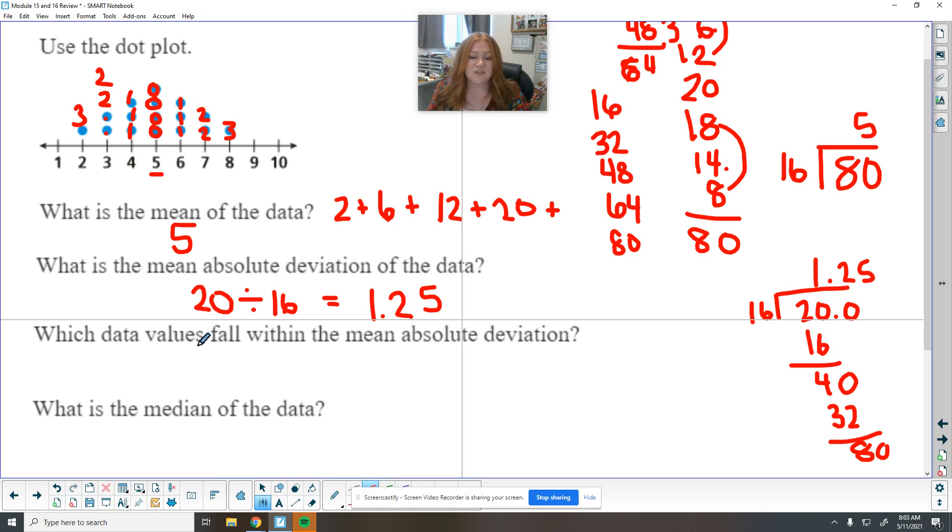So our next thing wants to know which of these measures fall within that mean absolute deviation. So we add them up. So we add the mean and the MAD and we subtract the mean and the MAD. So five plus 1.25 is 6.25. So anything smaller than 6.25 is within that normal range. And then subtracting this is 3.75. So anything between these. So 3 is too small. So these 4s fit inside of the normal. All the 5s do and all the 6s and then the 7s are too big. So the data points of 4, 5, and 6 fit within that normal range.